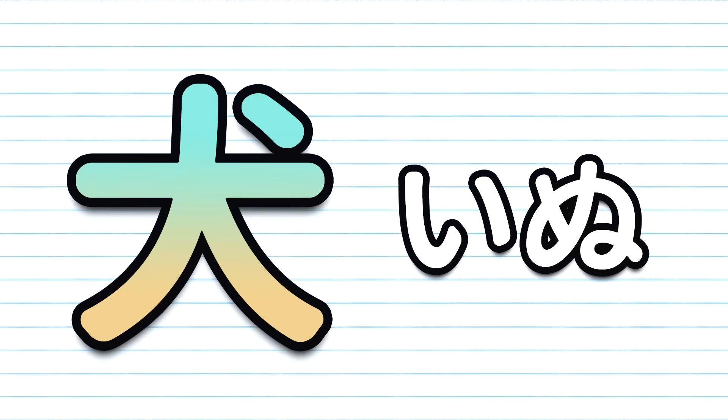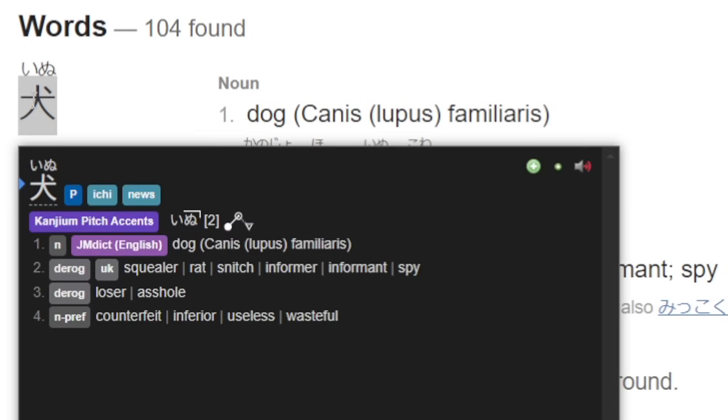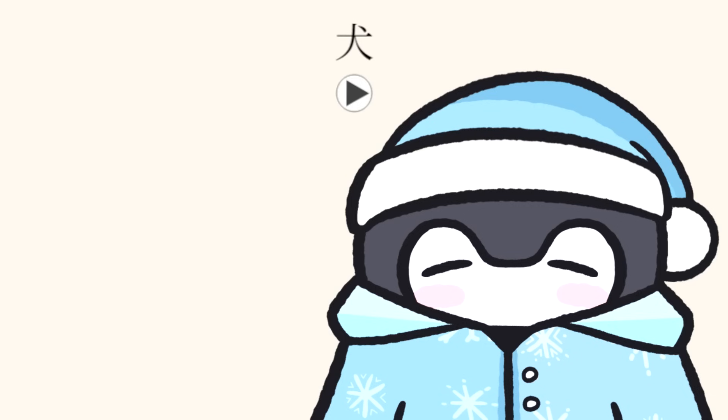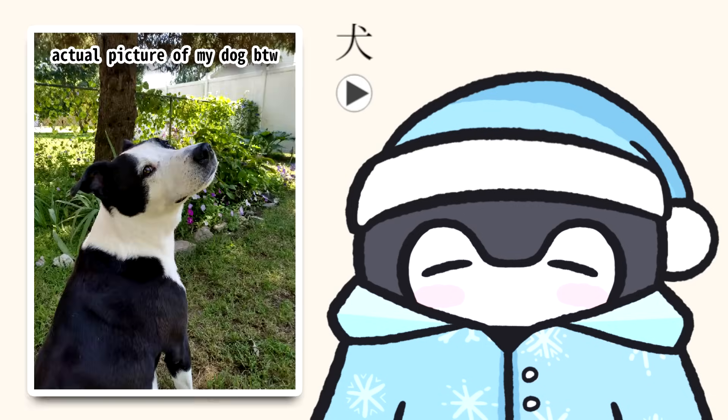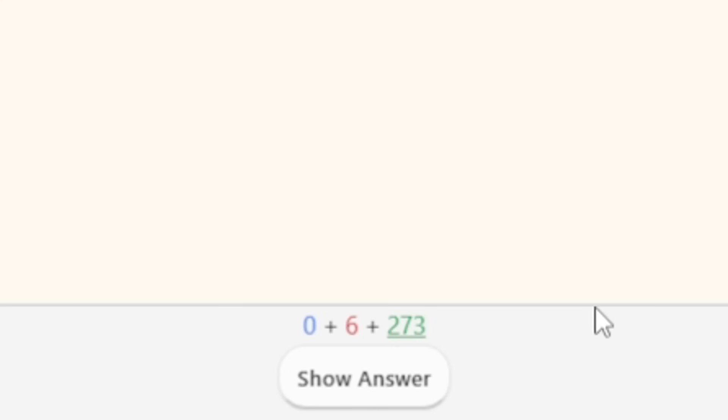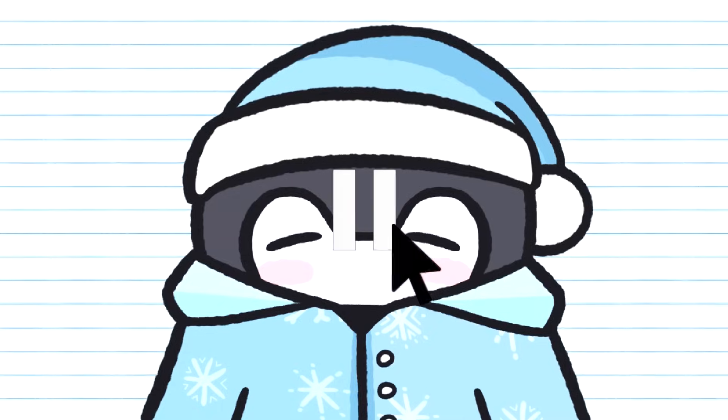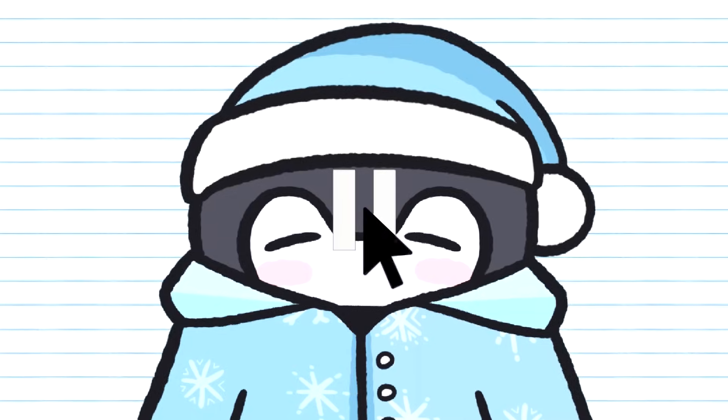Let's say I wanted to learn the word 'inu' in Japanese. I add it to my deck, see it once, think 'oh yeah, that means dog,' and press the good button. This pushes the card off until tomorrow. I should also note that you probably shouldn't use the easy or hard buttons — they cause really big deviations in how your cards are scheduled, so you'll want to stick to the good or again button most of the time.